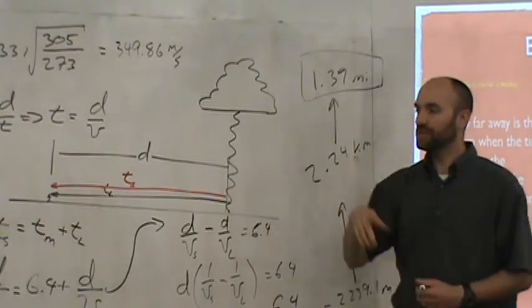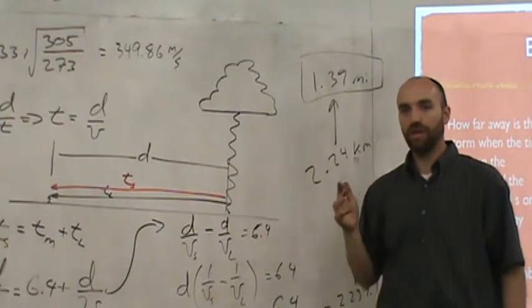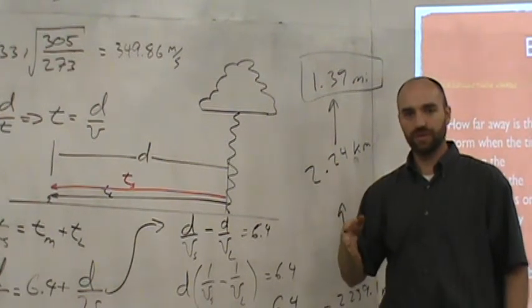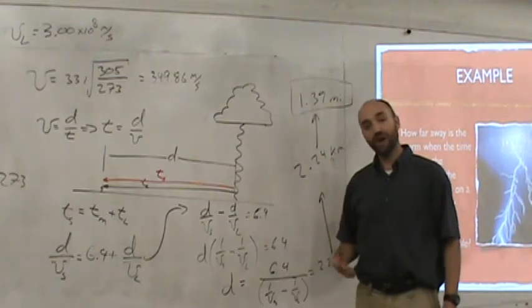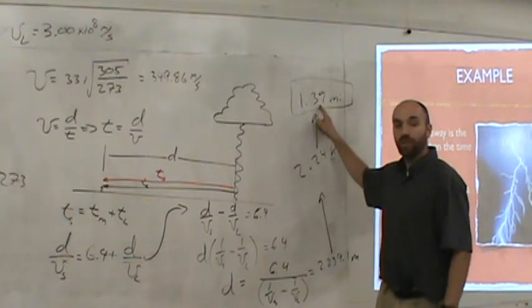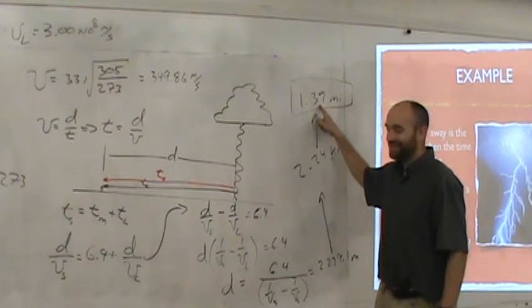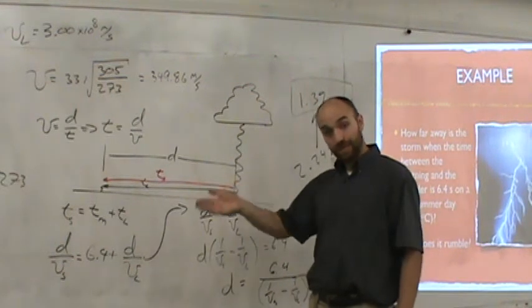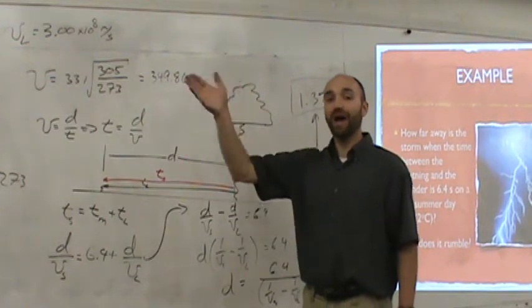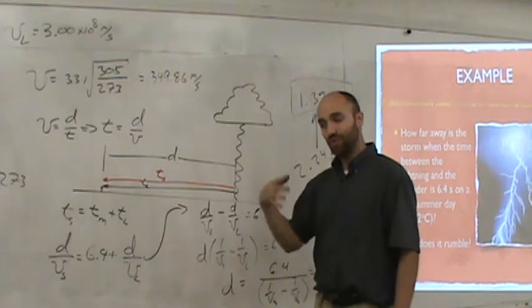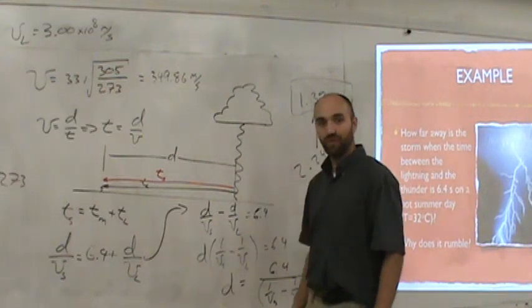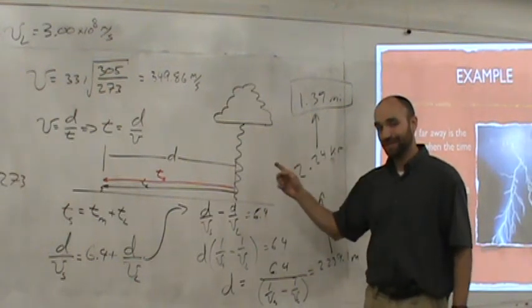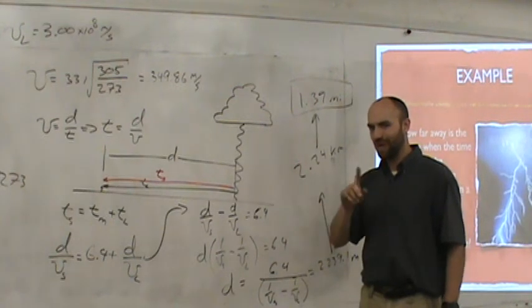If you see thunder, and then start counting. 1, 2, 3, 4, 5, 6. How far away is the storm? 1.39 miles. Now, I don't know about you, but when I was a kid, my mom told me, just count the seconds between the lightning and the thunder, and that's how many miles away the storm is. So if what my mom told me was true, that storm would be 6.4 miles away. But it's not. It's 1.4 miles away. You've got to step through the math. You've got to do the physics. Old wives' tales don't give you the answers.